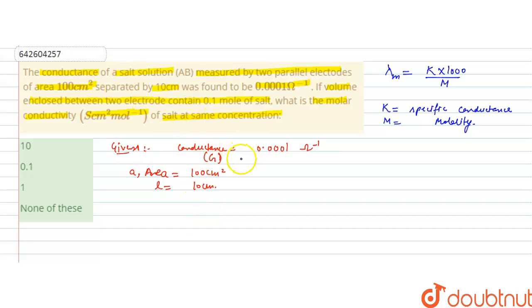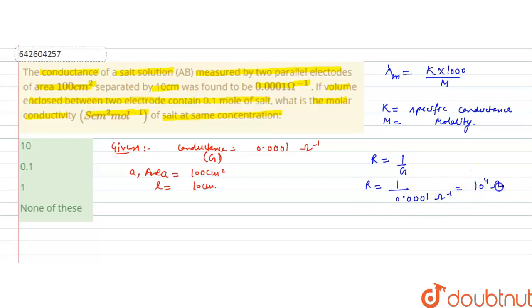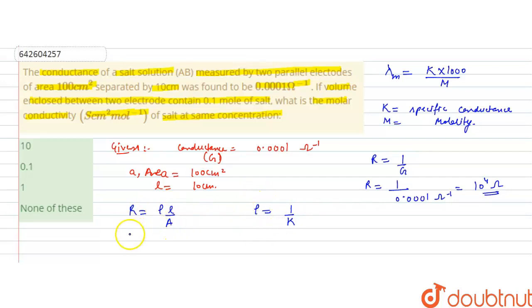Since conductance is given, we can first calculate the resistance: R = 1 / conductance = 1 / 0.0001 = 10⁴ ohm. Now, R = ρL/A, where ρ is the resistivity (specific resistance), and specific resistance ρ = 1/K where K is the specific conductance. Substituting, R = (1/K) × (L/A).